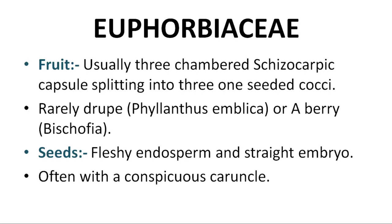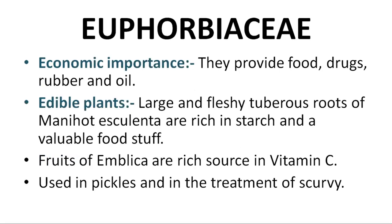Seeds have fleshy endosperm and a straight embryo. Rubber and oil are edible plants. Plants have fleshy tuberous roots rich in starch, making them a valuable food stuff.